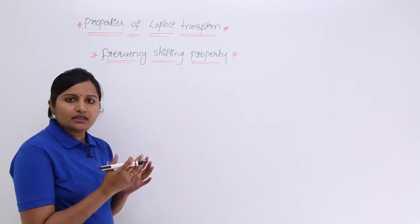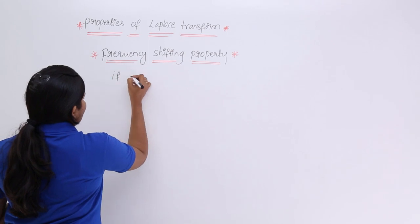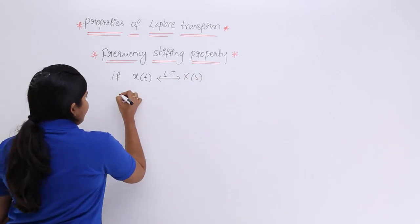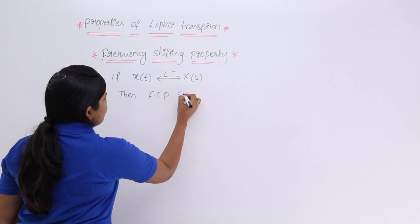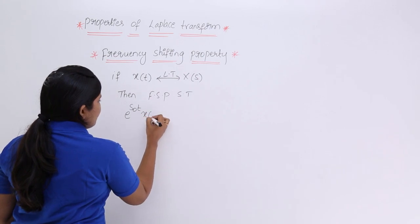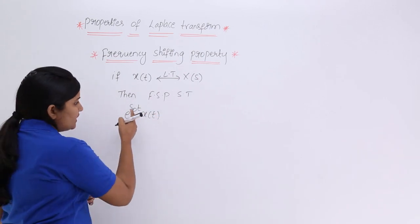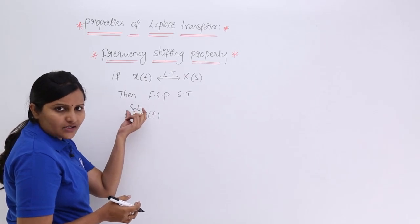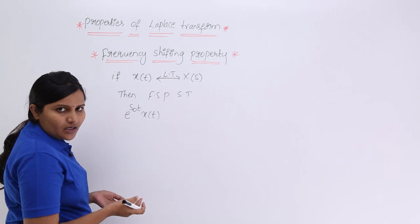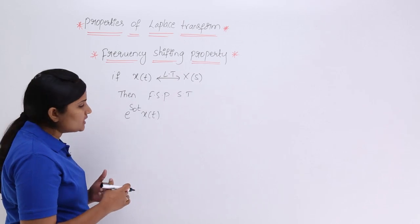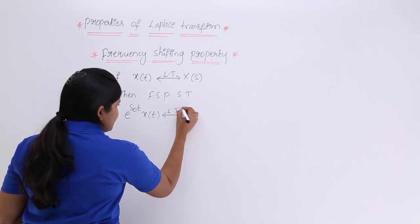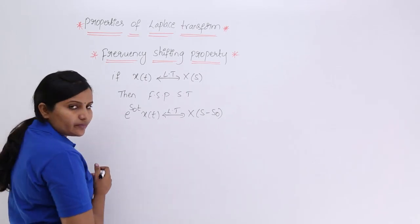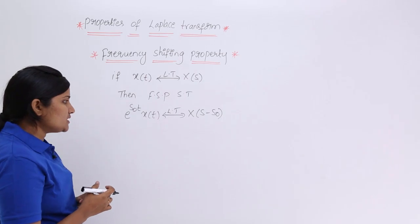To discuss the frequency shifting property, I want to consider a signal x(t) with a particular Laplace transform X(s). The property states that e^(s₀t) multiplied by x(t) — here s₀ itself contains a frequency component, so multiplying by e^(s₀t) adds another frequency and shifts the spectrum. The resulting Laplace transform you get is X(s - s₀).